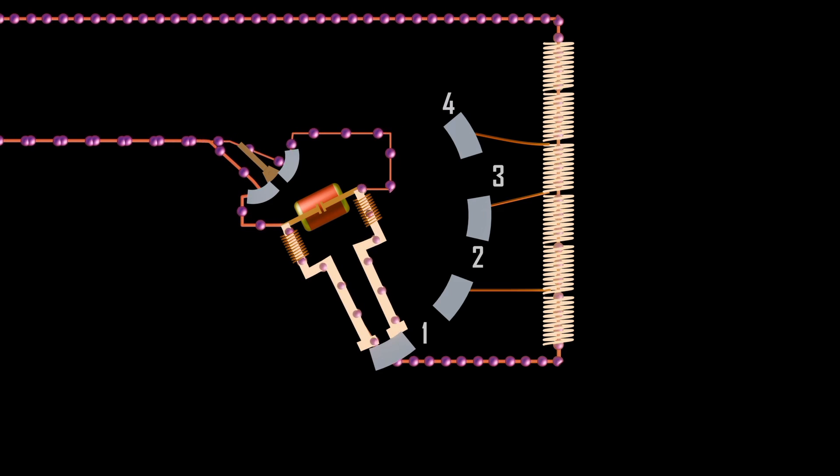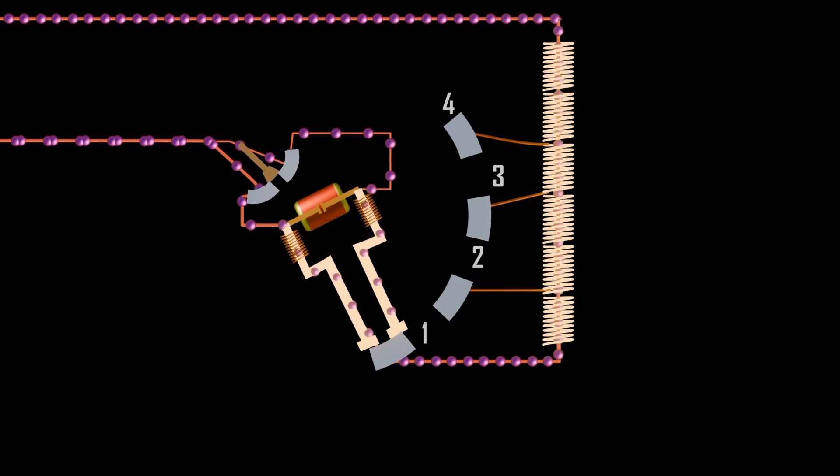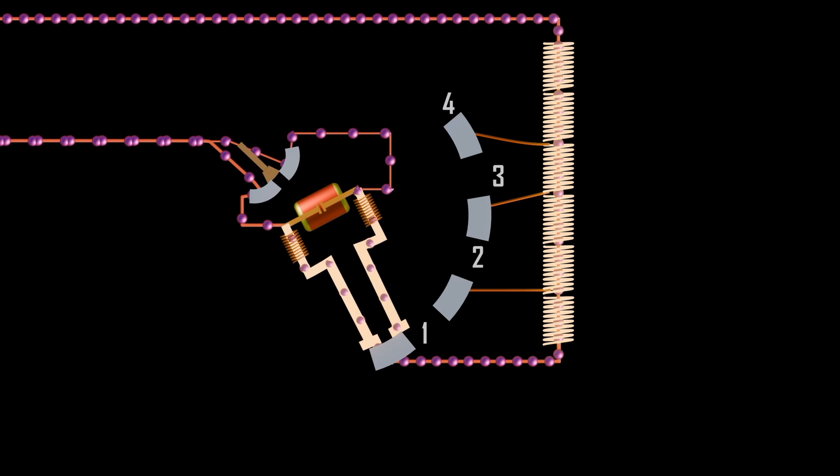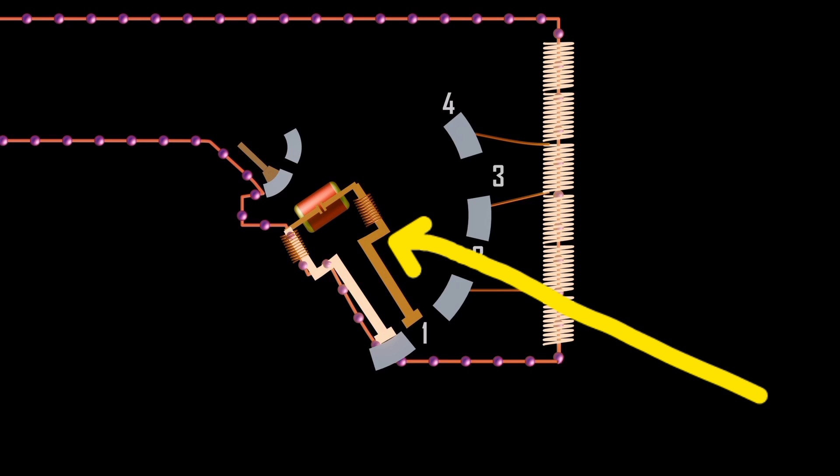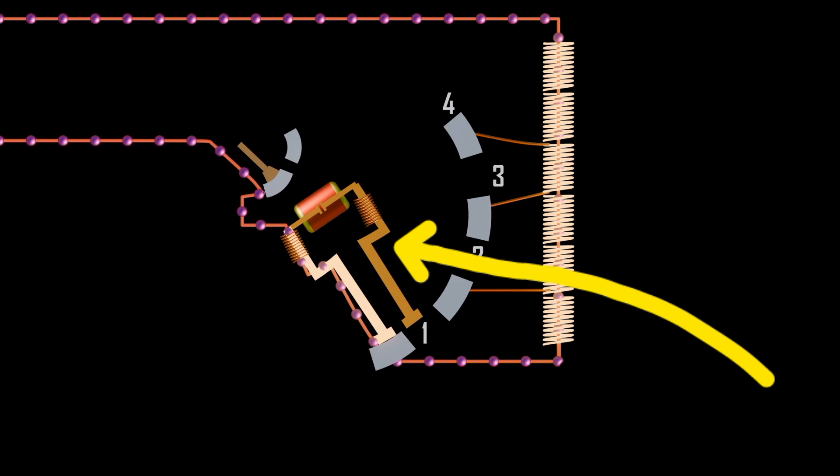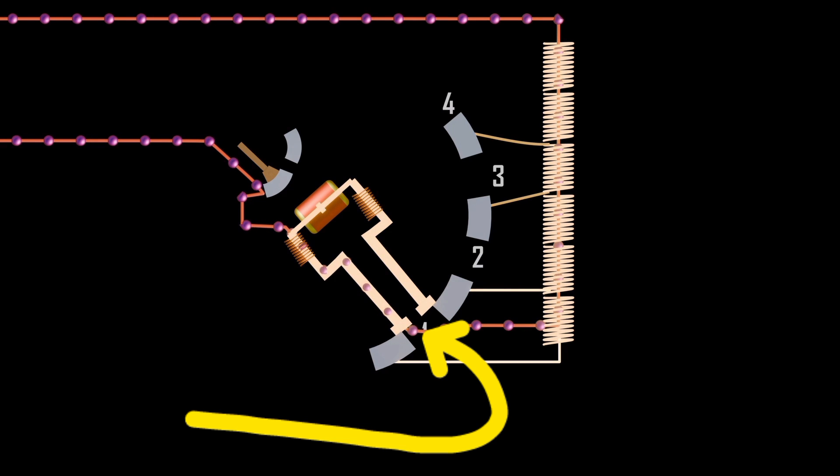When we want to move from tap one to tap two, the bypass switch switches to the first contact, meaning no current to the other contact. At the same time, we can move the selector switch, hence one side of the switch is not energized. Then with one side of the bypass switch not energized, we can still move the selector switch. Then both contacts of the selector switch are in contact with tap one and tap two.